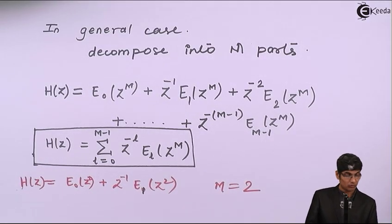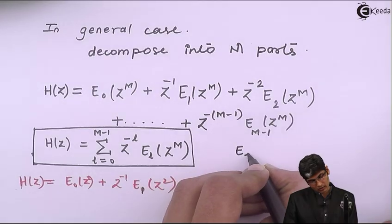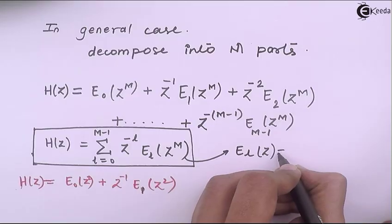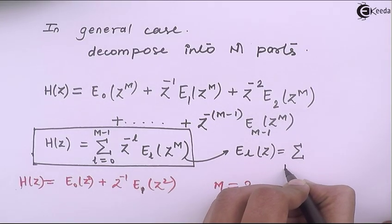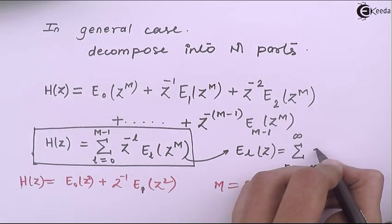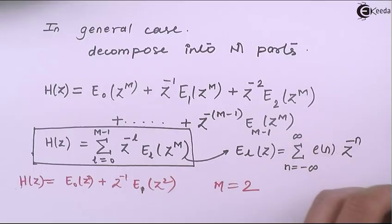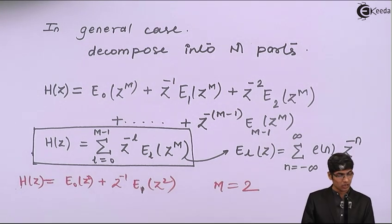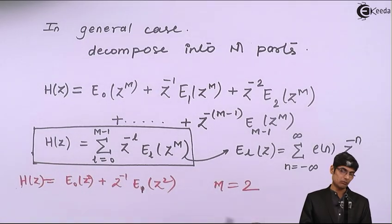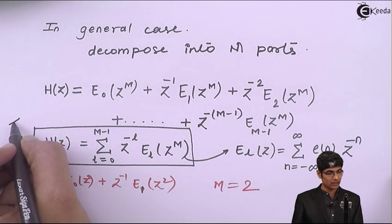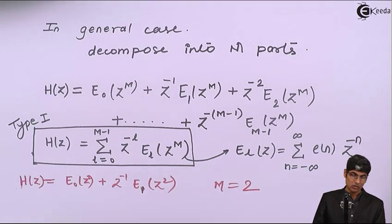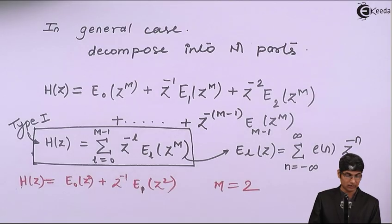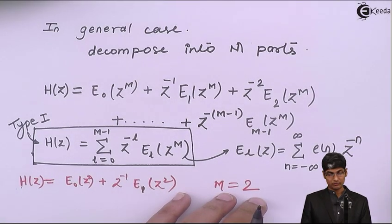Here E_l(z) represents the l-th polyphase component, where e(n) corresponds to h(Mn + l). This type of decomposition is called Type 1 polyphase decomposition.